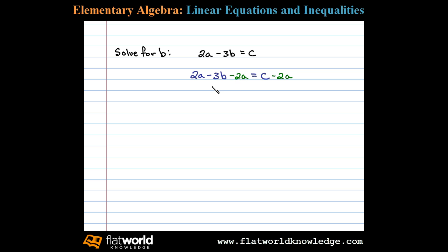That'll leave us with negative 3b equals c minus 2a. Now to isolate the variable b we can then divide both sides by the coefficient here, negative 3.